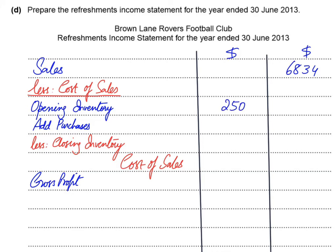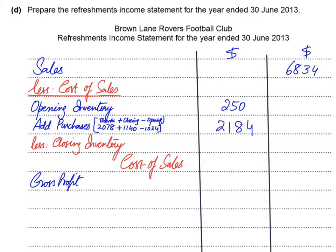To find purchases, we start with the bank figure — from the receipt and payment account, the purchase of refreshment paid is 2,078. We then adjust for accruals: closing accrued is added and opening accrued is deducted. Alternatively, make a PLCA (creditors account): creditor is a liability, so opening liability comes on the credit side and closing on the debit side. If we purchase from suppliers — Purchase debit, Liability credit; if we pay suppliers — Liability debit, Bank credit. Opening creditors are 1,034 and closing creditors are 1,140.